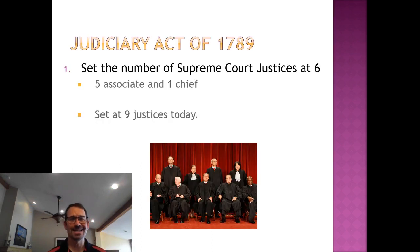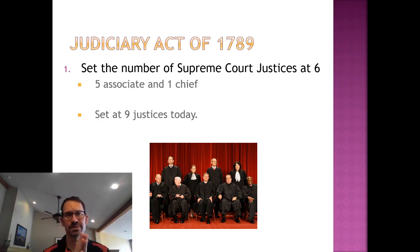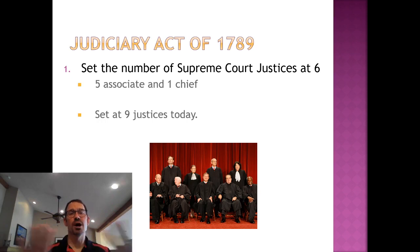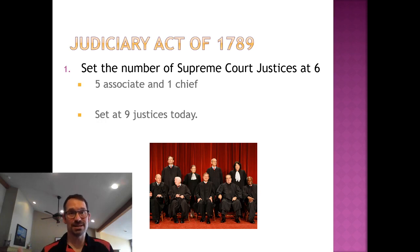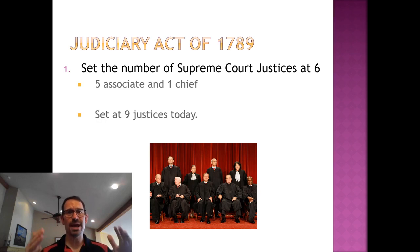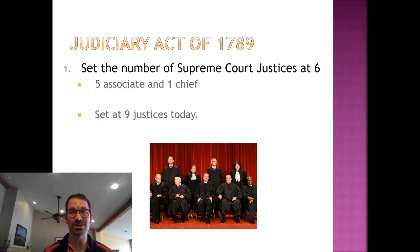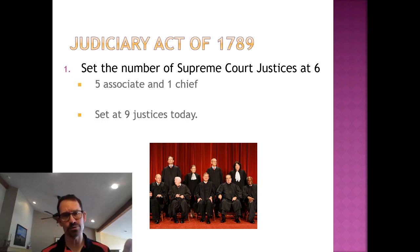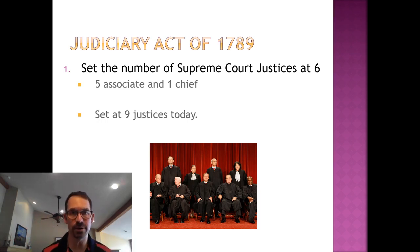The Judiciary Act of 1789 did five things. First, it set up the number of justices on the Supreme Court — five associates and one chief. There is nothing in the Constitution about the number of Supreme Court justices. Article III talks about a Supreme Court, but the Judiciary Act of 1789 was the first thing to establish that number. Throughout history we went from six, seven, eight, nine, to ten. What you need to know is that it set the number of justices, or gave Congress the ability to do that.